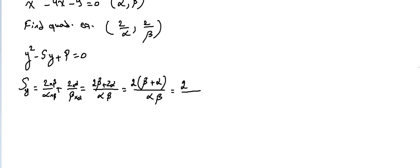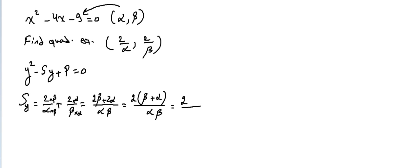Taking out the common factor two, what remains is beta plus alpha over alpha beta, giving two times (alpha plus beta) over alpha beta. Here, alpha plus beta is the sum of the roots and alpha beta is the product in the original x equation.